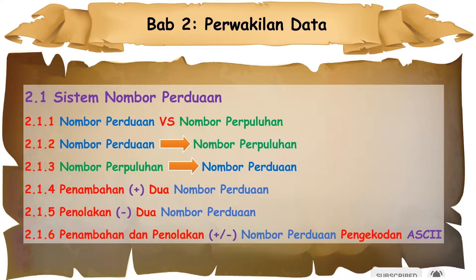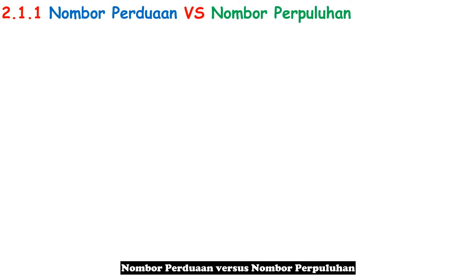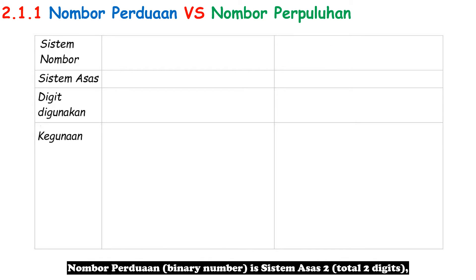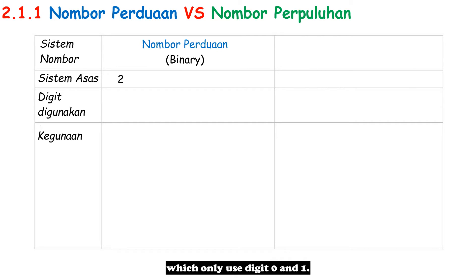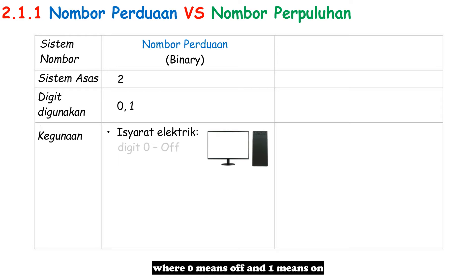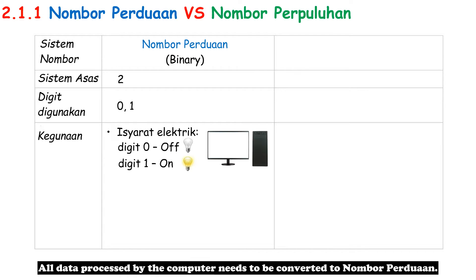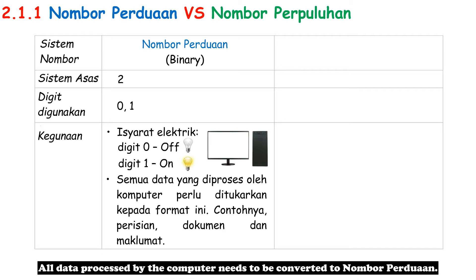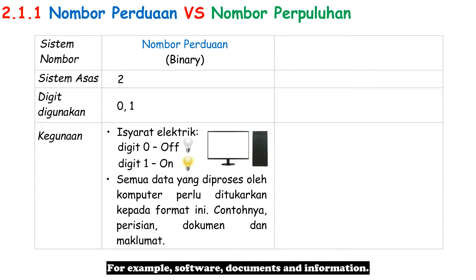Nombor Perduaan — binary number — is Sistem Asas Dua, which only uses digit zero and one. Computers only understand electric signals, where zero means off and one means on. All data processed by the computer needs to be converted to Nombor Perduaan — for example, software, documents, and information.